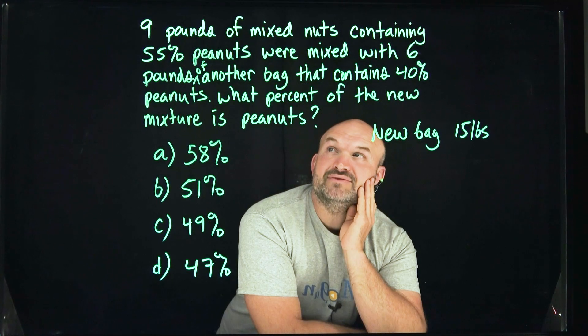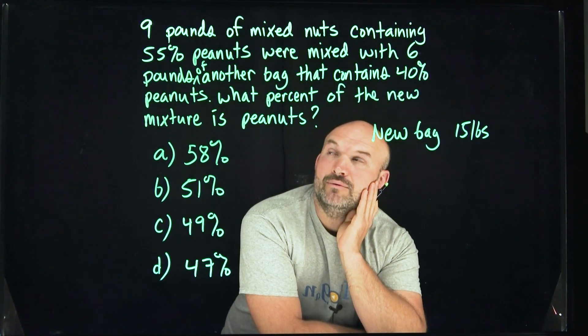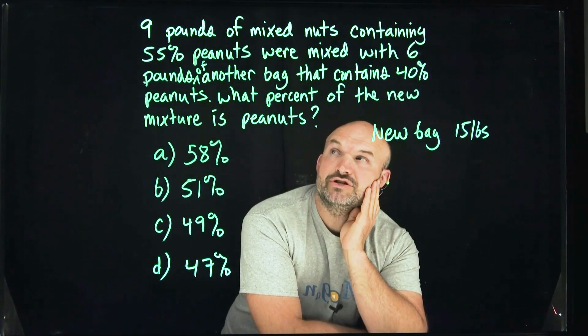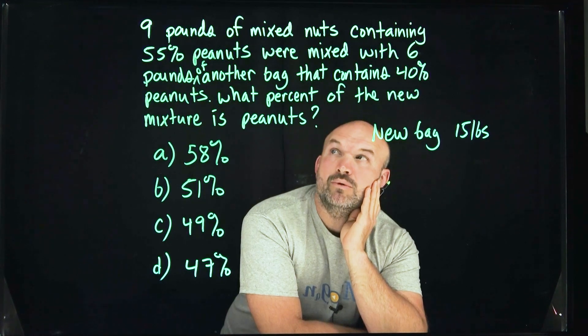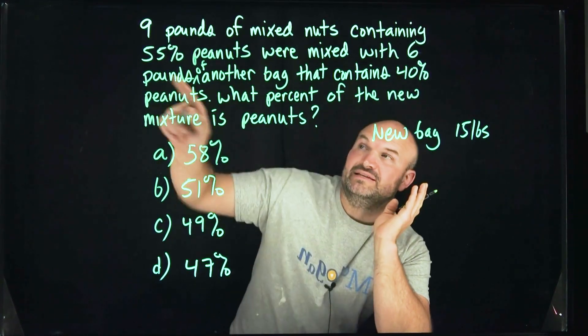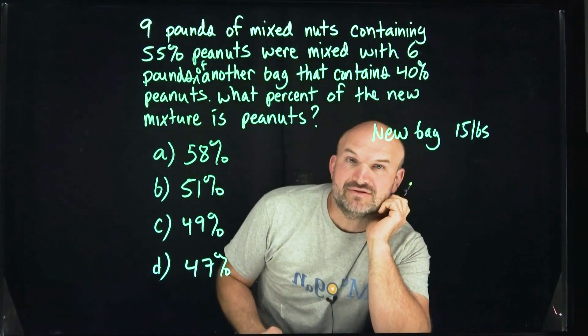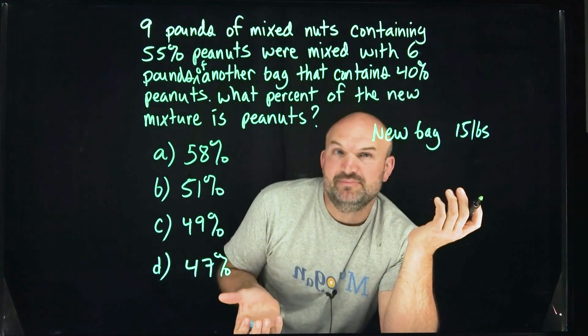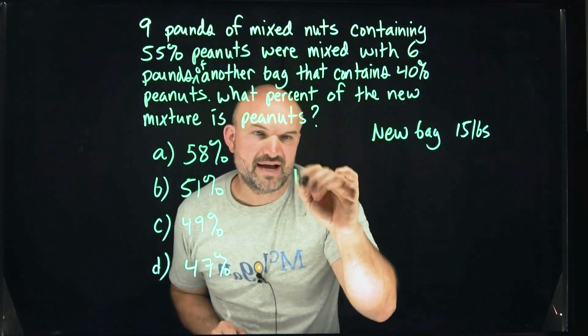The first bag — nine pounds — is 55% peanuts. How are we going to determine how many peanuts that is? We simply need to take 55% and multiply it by nine pounds. That will tell us how many peanuts we have. So let's go ahead and figure out bag number one.